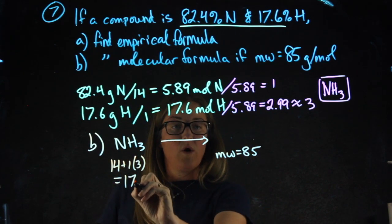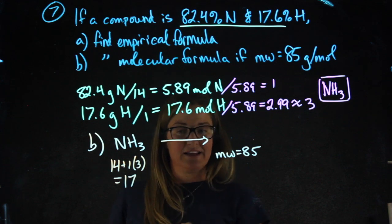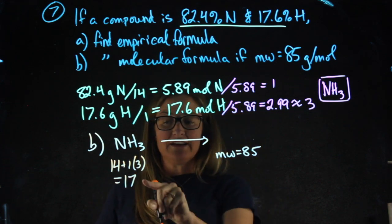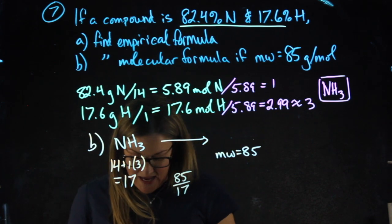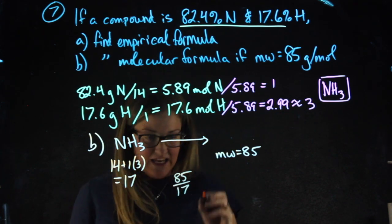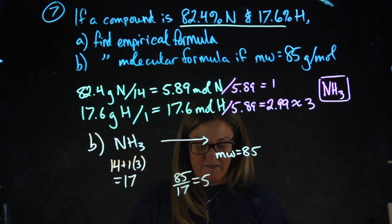I want to figure out what do I need to multiply 17 by to get to 85. So I divide 17 into 85. 85 divided by 17 tells me I need to multiply by 5.